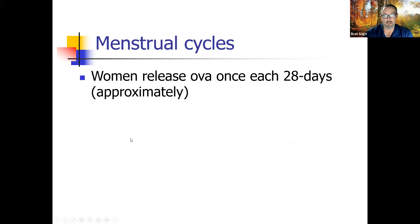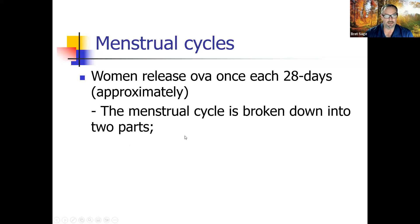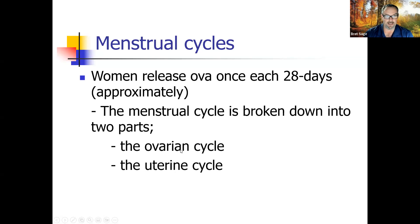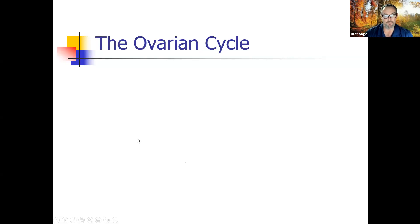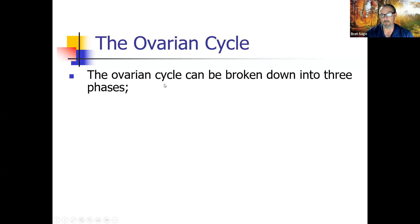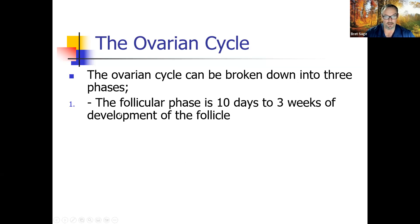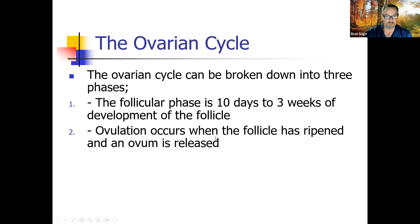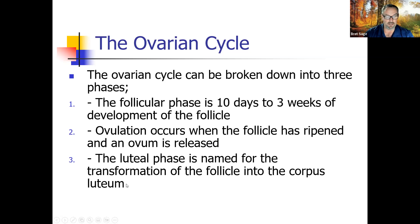Menstrual cycles: women release ova once every 28 days approximately, varying from woman to woman. The menstrual cycle has two main parts: the ovarian cycle — what's happening with the ovaries — and the uterine cycle — what's happening with the uterus. The ovarian cycle has three phases: the follicular phase (10 days to three weeks of follicle development right after the previous ovulation), ovulation (when the follicle ripens and the ovum is released), and the luteal phase (named for transformation of the follicle into the corpus luteum, which guides early pregnancy before the placenta takes over).